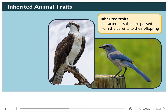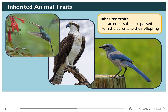This is an osprey. It loves to eat fish. Notice the hook on its beak, which helps it handle its prey. Look at this hummingbird — what a long beak it has. Hummingbirds eat nectar, and its long beak allows it to reach all the nectar deep inside the flower. All of these beak types are inherited.